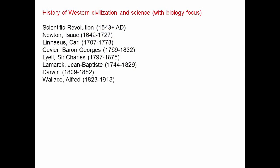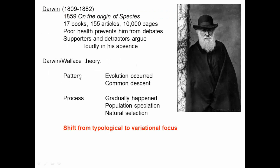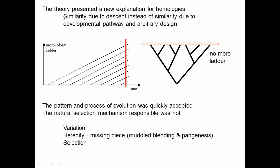Continuing our tour of science, we've reached Darwin and Wallace. Darwin wrote this famous book and proposed what we'll call the Darwin-Wallace theory — at the time a hypothesis, because we haven't yet tested its predictions. There's a pattern and a process: evolution occurred, things are related, the process is natural selection, and the big conceptual shift is from a typological approach to a variational approach. This theory also presented a new explanation for homologies.